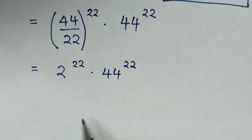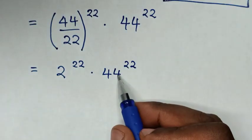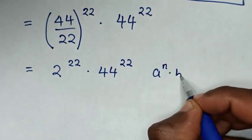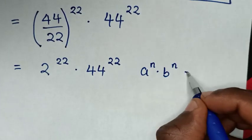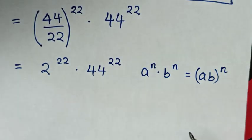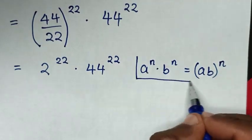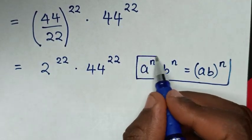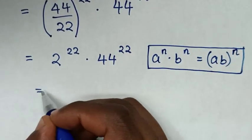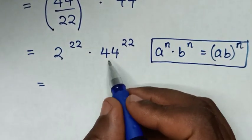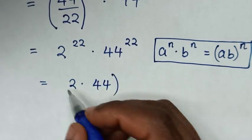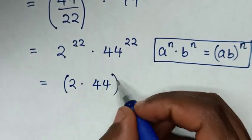This multiplication of exponents is in the form of a power of n times b power of n, which is equal to (a times b) bracket power of n. So it will be equal to (2 times 44) bracket, common power of 22.